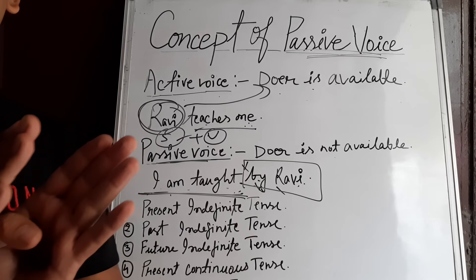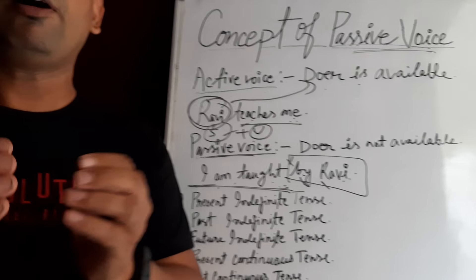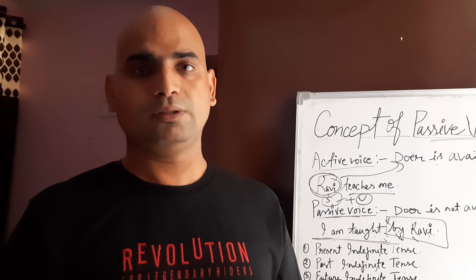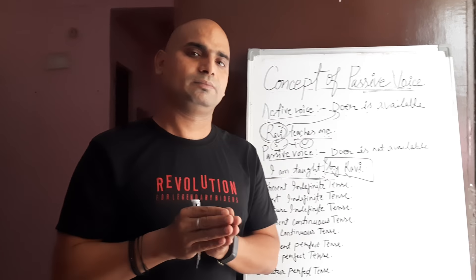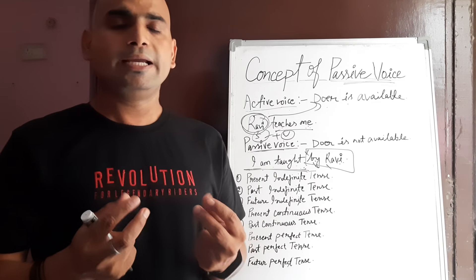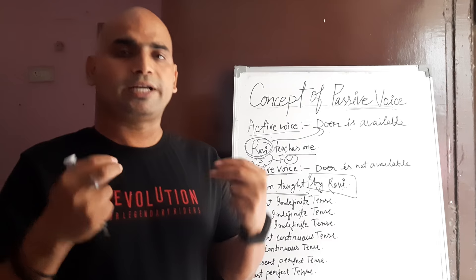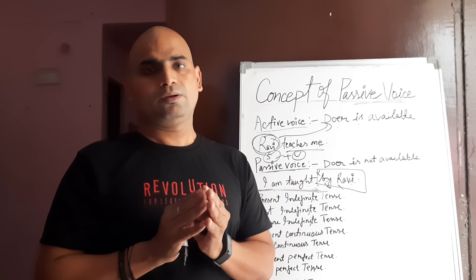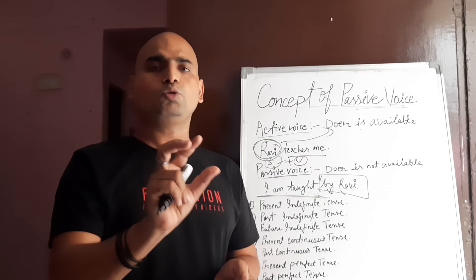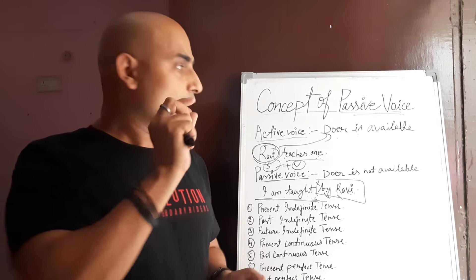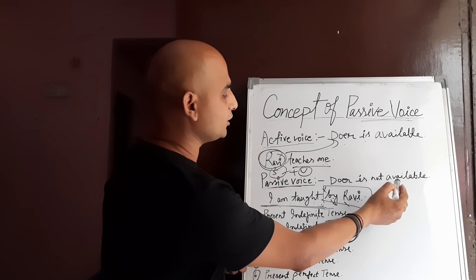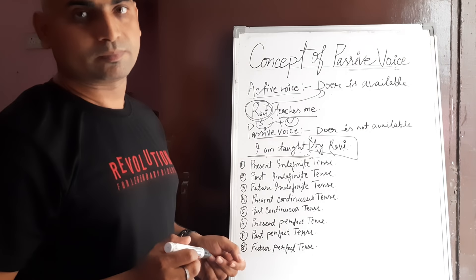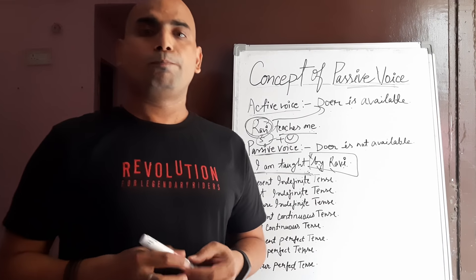These topics are very fundamental for a learner who starts to learn English as a language and as literature. We need to understand the fundamentals of English grammar, and I am presenting this before you in the simplest way so that you can understand English grammar easily. The two most important things are: in active voice the doer is available, and in passive voice the doer is not available. We can find passive voice in eight tenses.